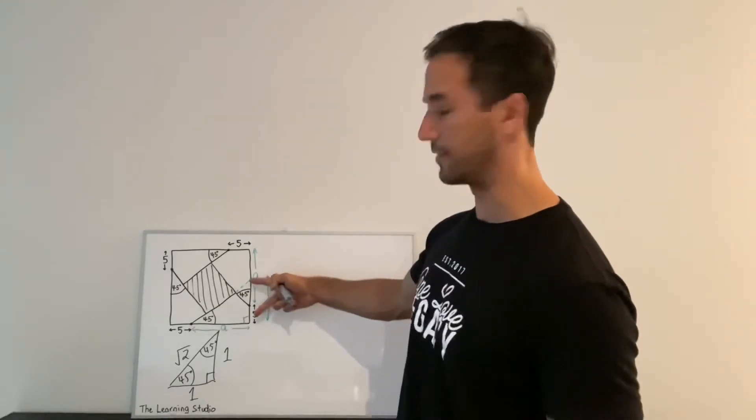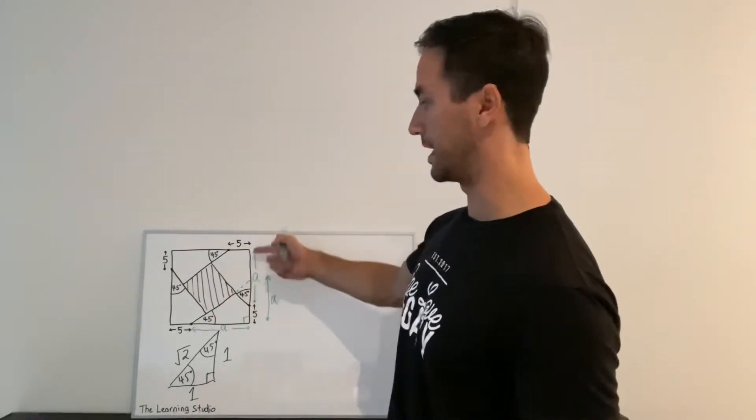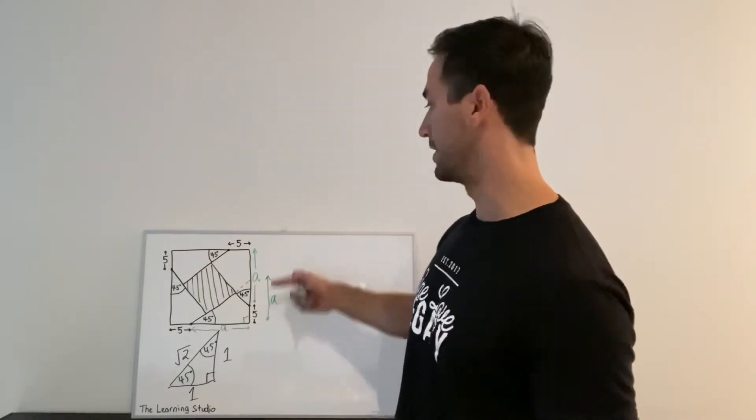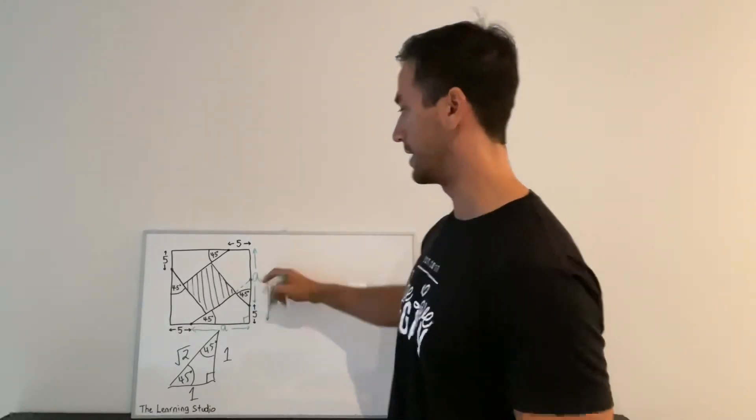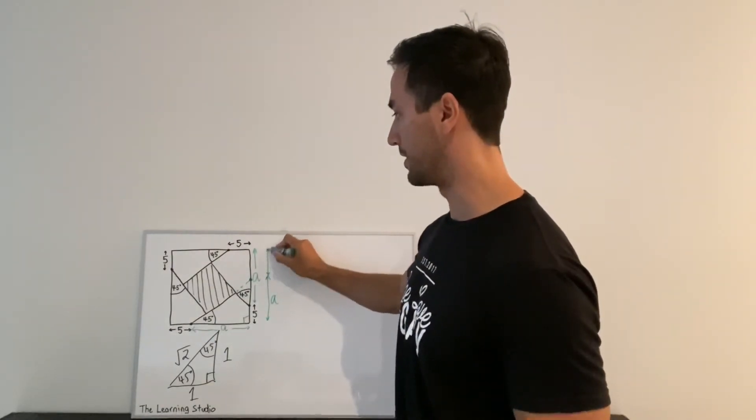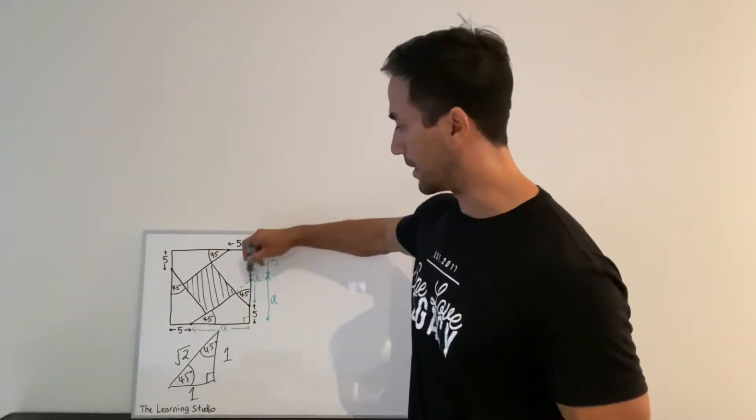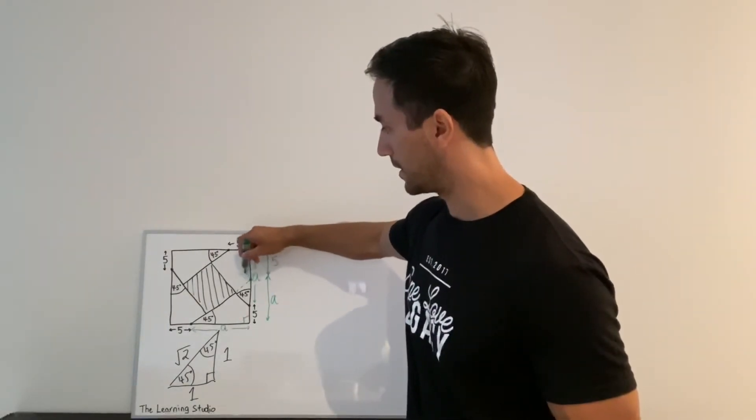This other side of the triangle has to be the same length, and now since we know that the total length of this side is a plus five, that must mean that this other leftover bit here must also be five.